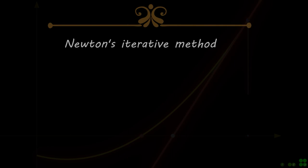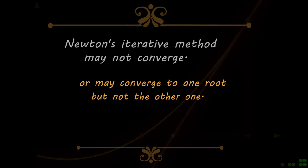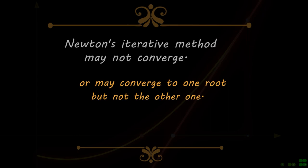Newton's method may not converge, or may converge to one root but not the other. In addition, when the derivative at the iteration point is zero, this method stalls.